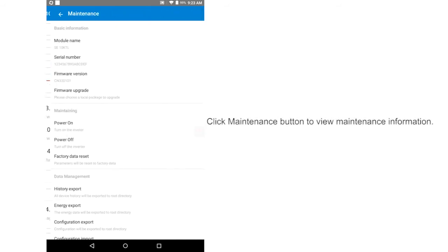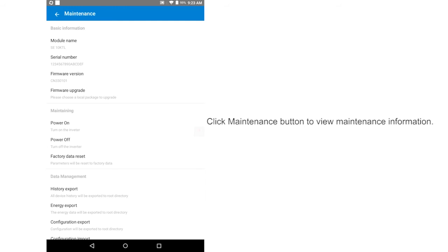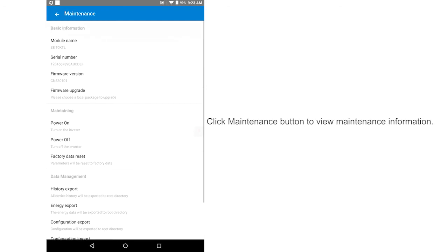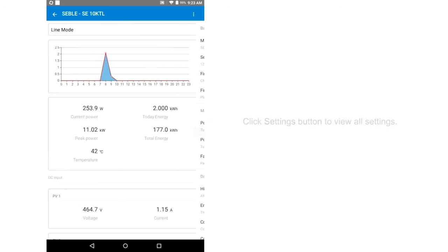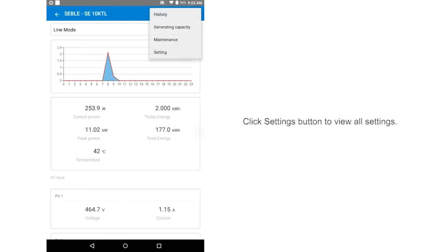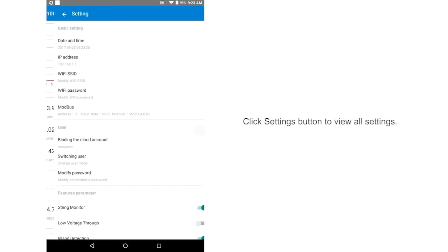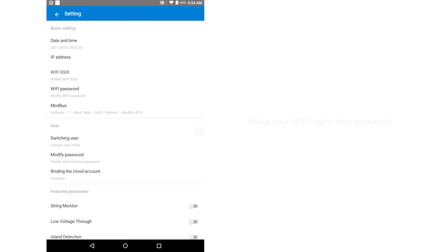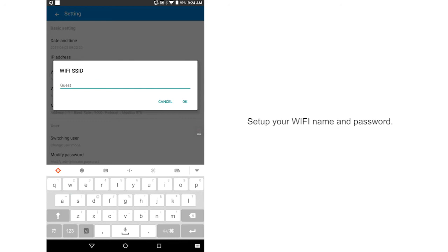Click maintenance button to view maintenance information. Click settings button to view all settings. Set up your Wi-Fi name and password.